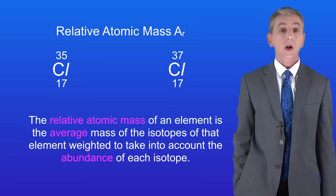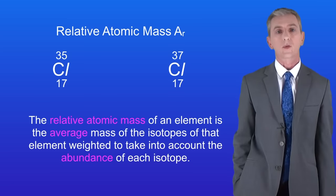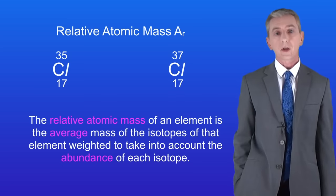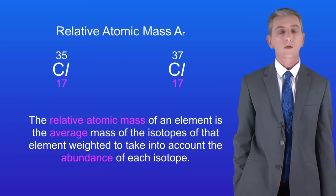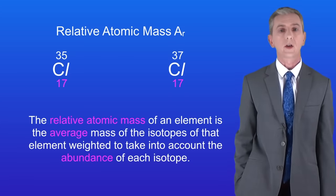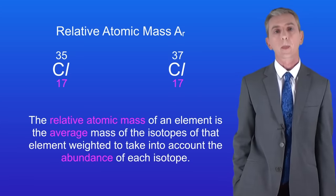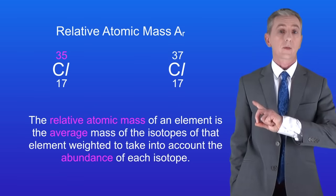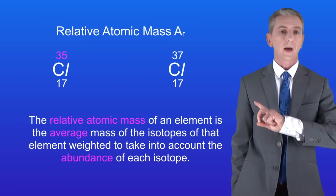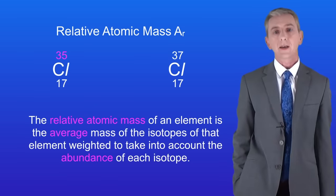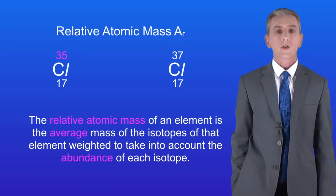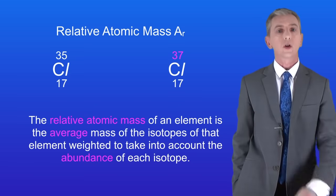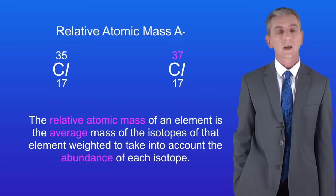The element chlorine has got two main isotopes. Both have an atomic number of 17, as all isotopes of chlorine have got 17 protons in their nucleus. This isotope of chlorine has a mass number of 35 because it has 18 neutrons in its nucleus, whereas this isotope has 20 neutrons in its nucleus, so it has a mass number of 37.